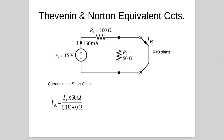To verify that all the current actually flows through the short circuit, we can use the current divider rule. The 150 milliamps times the opposite resistor in the parallel network — in this case 50 ohms — over the sum of the resistors gives 150 milliamps times 50 over 50, which is just 1. So the short circuit current is the full 150 milliamps; all of that current flows through the short circuit.